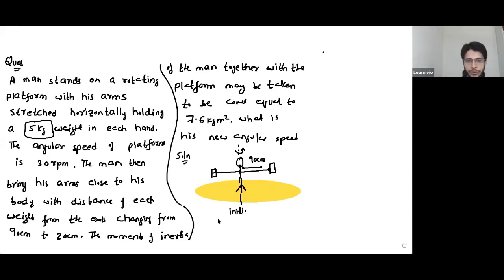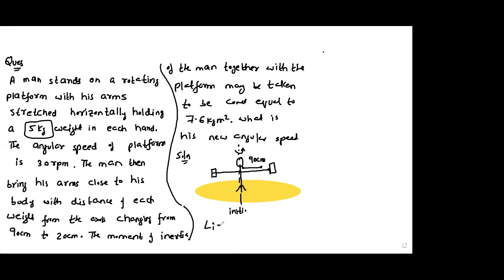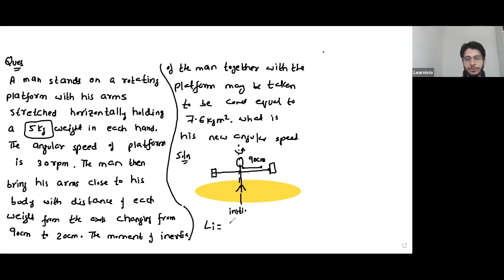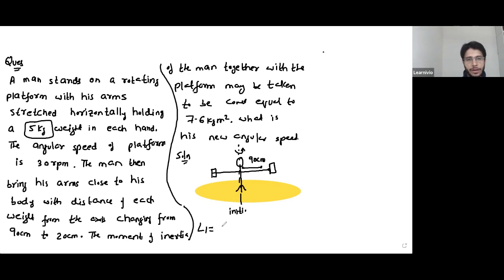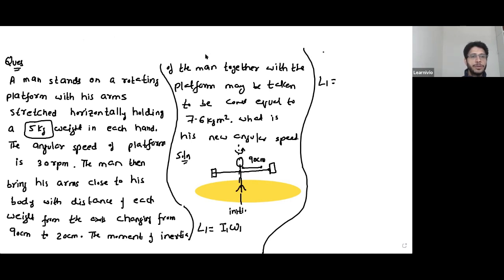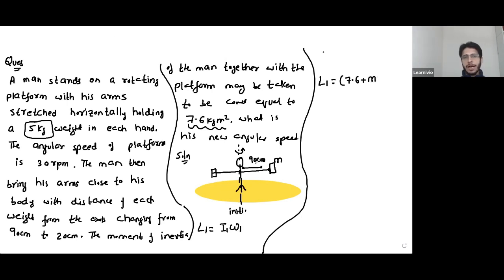We are supposed to calculate the final angular velocity. I am calculating the initial angular momentum. The initial angular momentum is the moment of inertia of the system multiplied by the initial angular velocity. L1 is I1 times omega 1. I1 is the moment of inertia of the platform plus the moment of inertia of each mass. The moment of inertia of the platform is 7.6, plus M multiplied by R square, where R is 90 centimeters, so in meters it would be 0.9 squared.